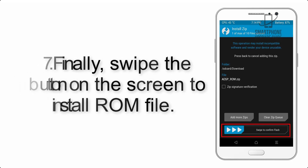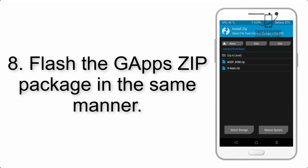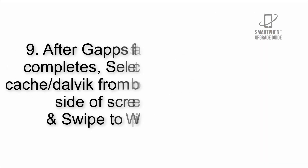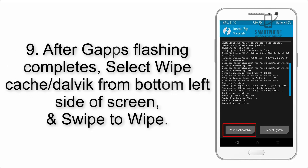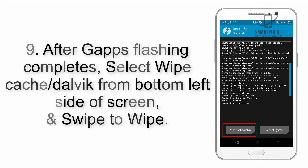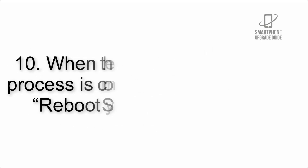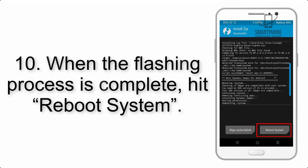Step 7: Swipe the button on the screen to install the ROM file. Step 8: Flash the GApps zip package in the same manner. Step 9: After GApps flashing completes, select Wipe Cache and Dalvik from the bottom left side of the screen and swipe to wipe.